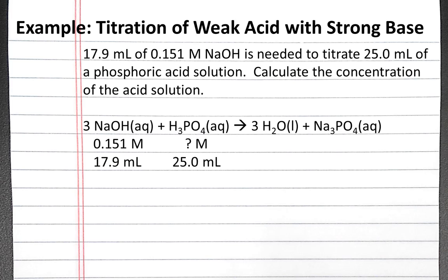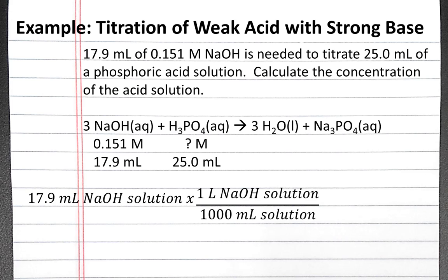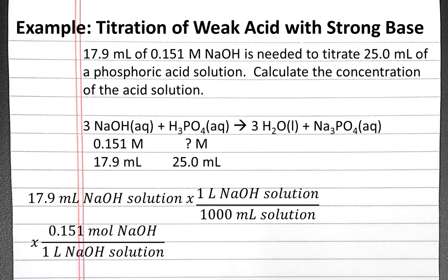To solve this problem, we'll want to use dimensional analysis. We're going to start with the 17.9 milliliters of sodium hydroxide solution, and we want to end up with moles of phosphoric acid. Our first step is to convert from milliliters of solution into liters of solution, and then we can use the molarity of sodium hydroxide to convert from liters of sodium hydroxide solution into moles of sodium hydroxide.